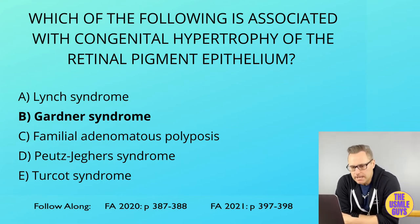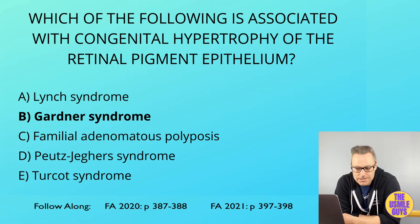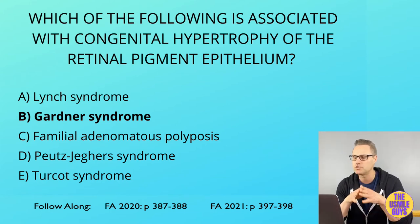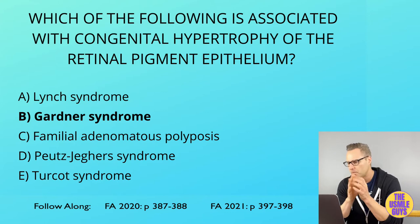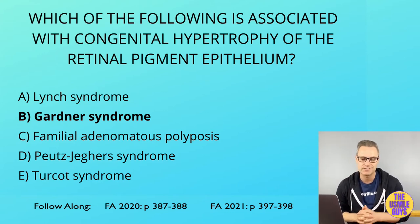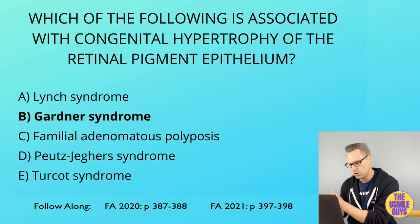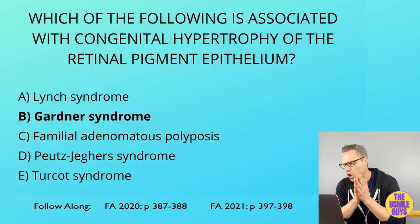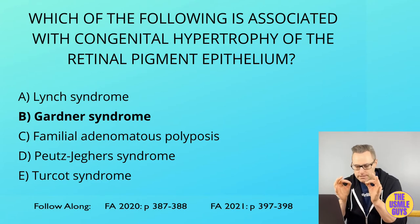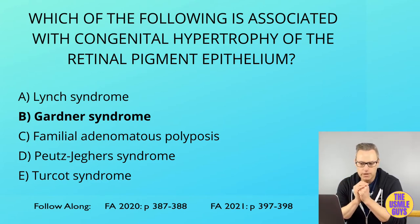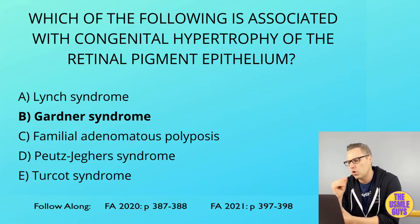First up we have FAP, which is inherited in an autosomal dominant manner and is the result of a mutation of the APC tumor suppressor gene — found on chromosome 5. As with conditions like retinoblastoma, this follows the two-hit hypothesis. In a patient with FAP, you will find thousands of polyps that begin after puberty; they are pancolonic and always involve the rectum. The only way to prevent this is with a colectomy; otherwise there is a 100% chance this turns into colorectal cancer.